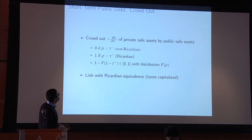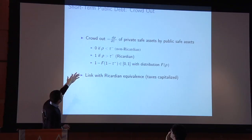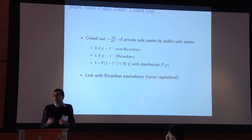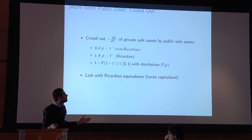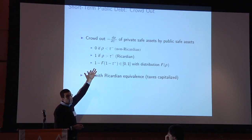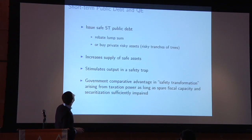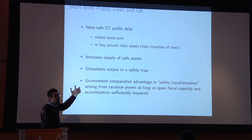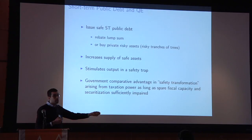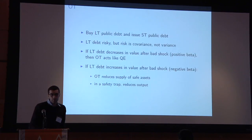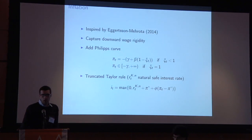Working through the model, there are two regimes. If the securitization constraint is sufficiently impaired — a non-Ricardian region — issuing public assets does not crowd out private safe assets; instead it expands the supply of safe assets, thereby stimulating the economy. If by contrast the securitization capacity of the economy is very good, you're in the Ricardian region where public assets completely crowd out private safe assets. So by issuing public debt and simultaneously purchasing private risky assets — that's QE — you can stimulate the economy as long as you're not in the fully Ricardian region.